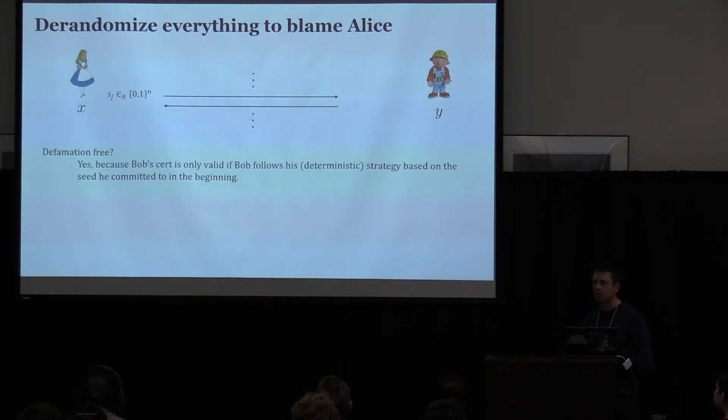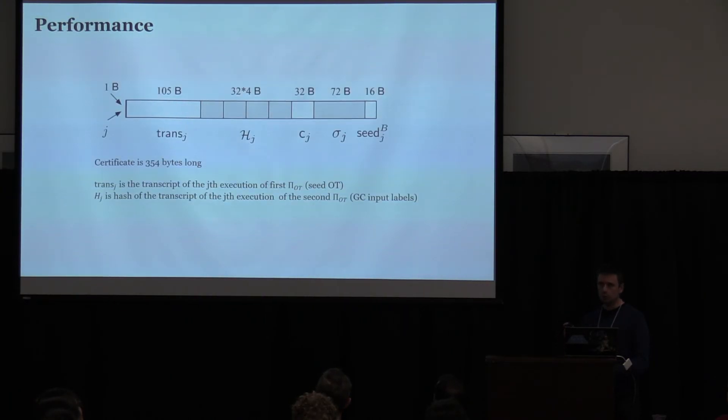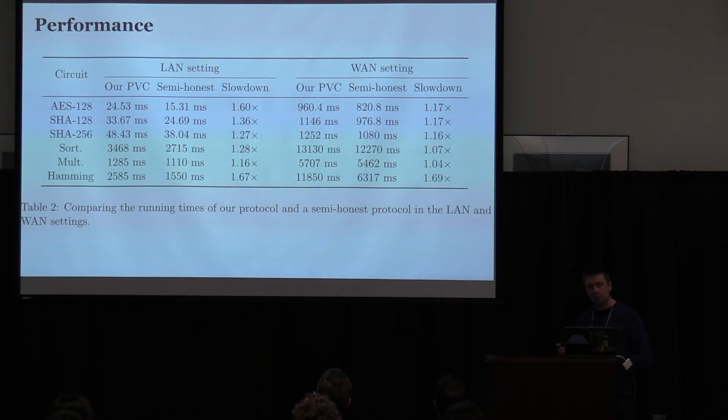So the verifier, right, because Bob is deterministic and he committed to his randomness in the very beginning. As part of certificate of cheating, he has to open this randomness and the verifier will see did Bob's, every Bob's message was consistent with Bob's randomness and it only accepts the certificate if in fact it was. So that's the whole thing. I wanted to briefly show the performance numbers and they're very, very nice. The certificate is 354 bytes long. Here is, this is the transcript of the original OT. There is a couple of hashes of some other OTs, see the signature. So everything put together, it's a small secret size. It was implemented. I think, I think that people weren't, I think people really should be excited about the PVC publicly verifiable covert, but partly maybe why they weren't is because implementation is kind of painful and it was not available. It is available now.